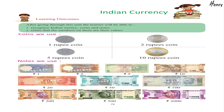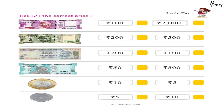Indian Currency — Learning Outcome: After going through this unit, the learner will be able to recognize Indian money — coins and notes — and relate that the numbers on them are their values. Coins we use: 1 rupee coin, 2 rupee coin, 5 rupee coin, 10 rupee, 20 rupee, 50 rupee, 100 rupee, 200 rupee, 500 rupee, 2000 rupee. Take the correct price.